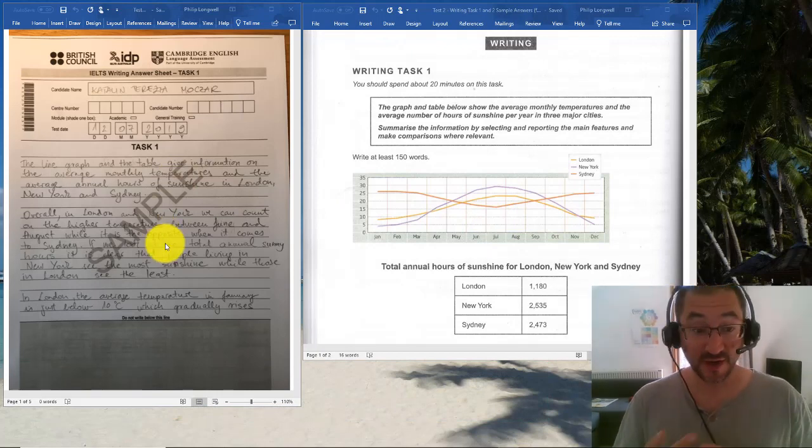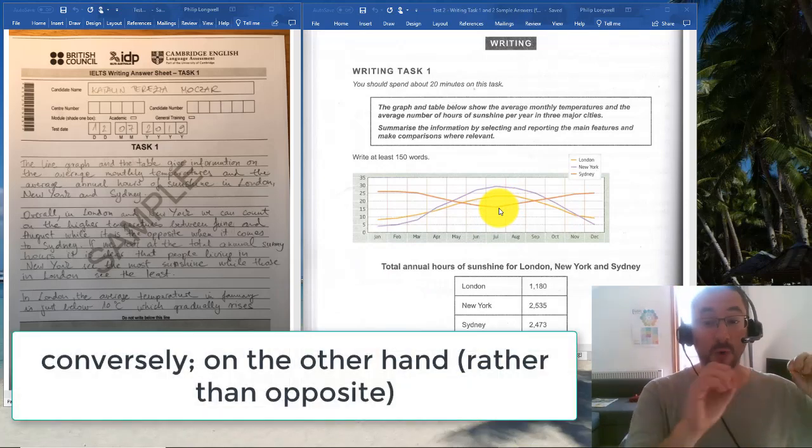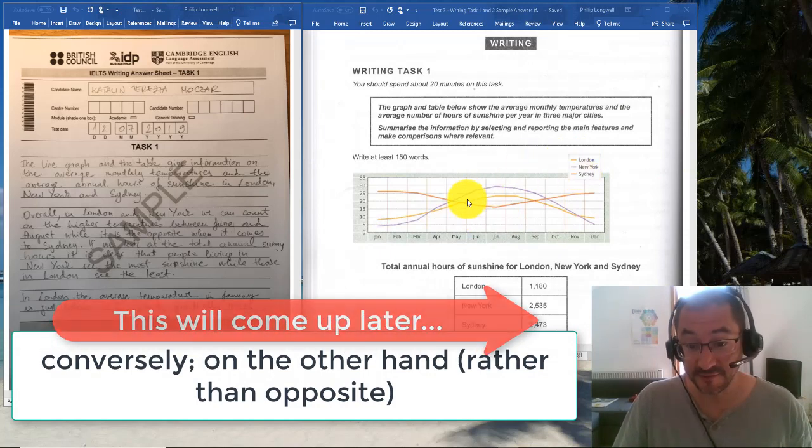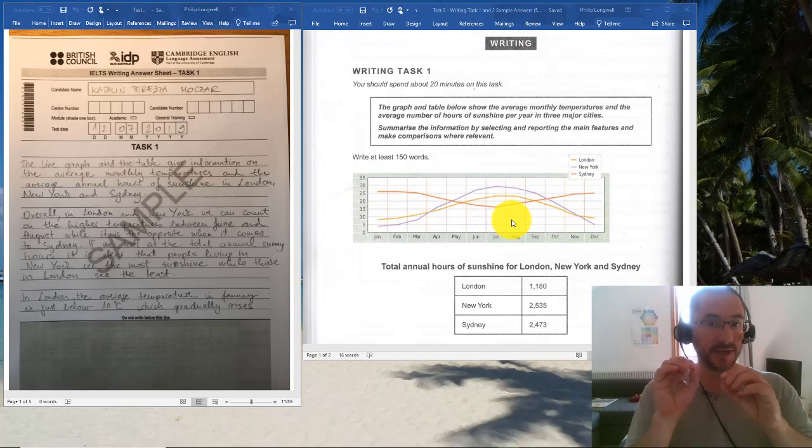And then you said the opposite—another word we could use instead of opposite would be vice versa. Later you could use words like conversely or on the other hand to show a comparison between northern hemisphere cities London and New York, which have summer through June, July, August, and Sydney, which is a southern hemisphere city with higher temperatures around December, January, and February.